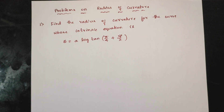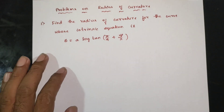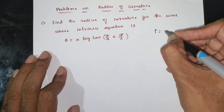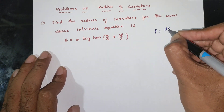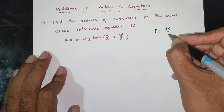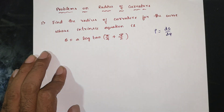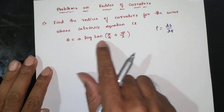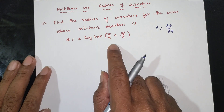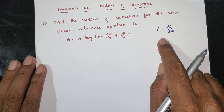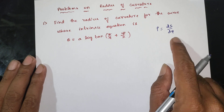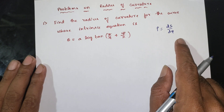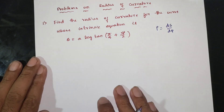If you have the radius of curvature when s is given, the formula is ρ = ds/dψ. When s is expressed in terms of ψ, this is the formula for radius of curvature: ρ = ds/dψ.